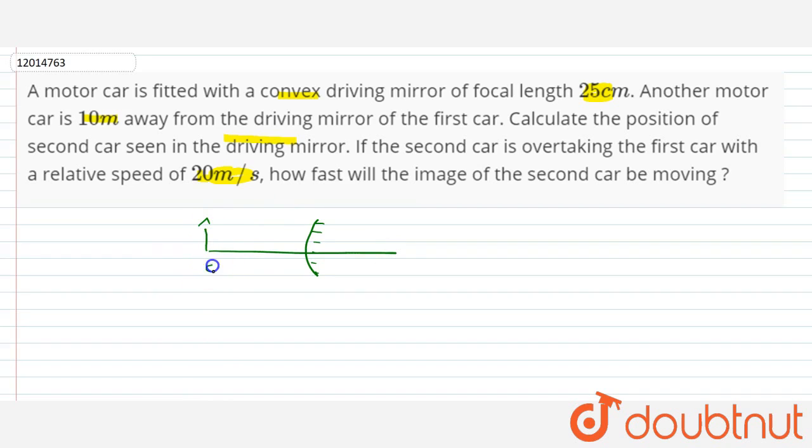Here is a car, the distance is 10 meters and the focal length is 0.25 meters. This direction is positive, this direction is negative. The focal length is here, so f is equal to plus 0.25. The object distance u will be minus 10 meters.